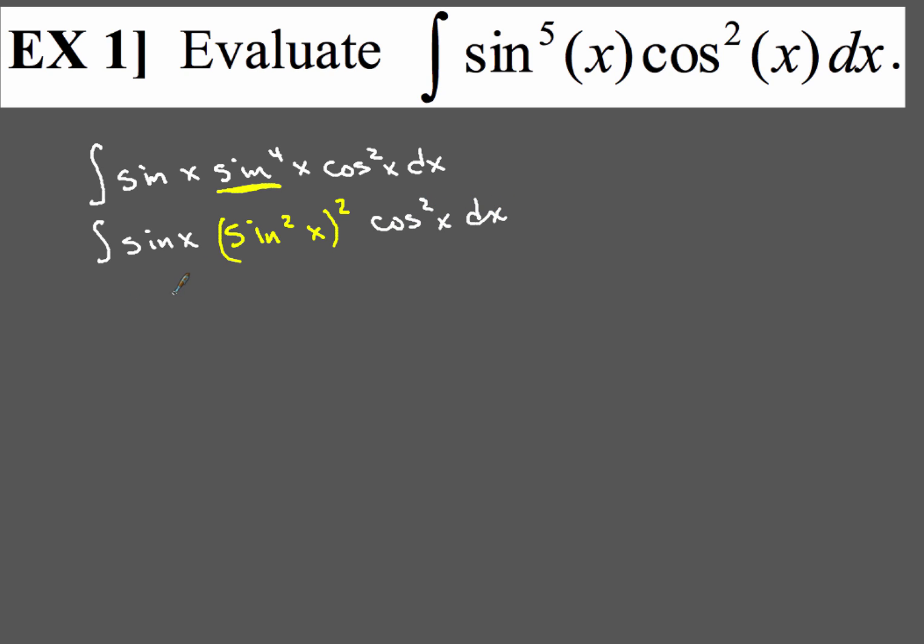Now, we're going to take that sin squared of x squared, that term in the middle, and we're going to rewrite that so that it turns into a trig identity. And you should recognize that as being 1 minus cos squared of x squared. And then we still have everything else is going to be the same.